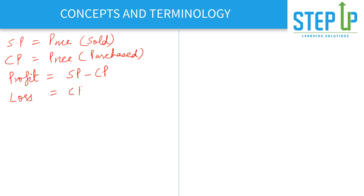Similarly, loss equals cost price minus selling price. For example, if I bought something for 100 rupees and sold it at 120 rupees, that is a profit of 20 rupees. If I bought something at 100 rupees and sold it at 80 rupees, I incur a loss of 20 rupees.